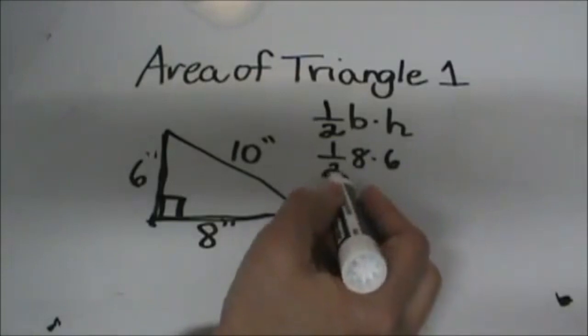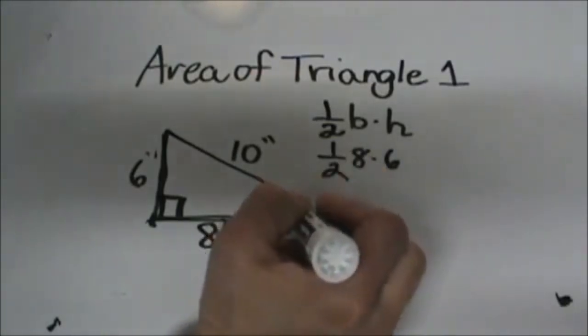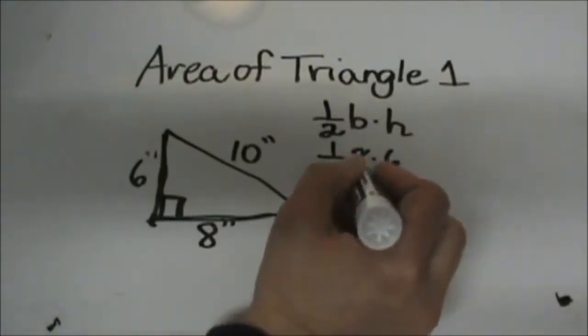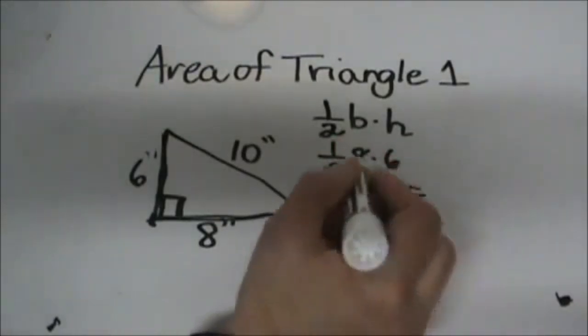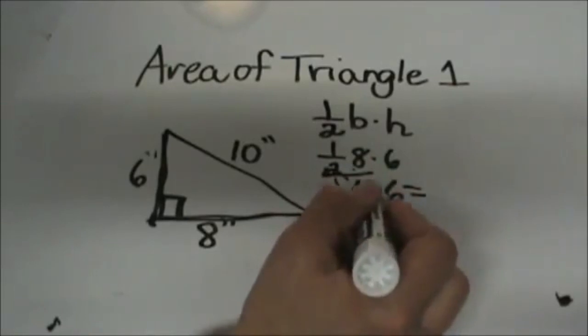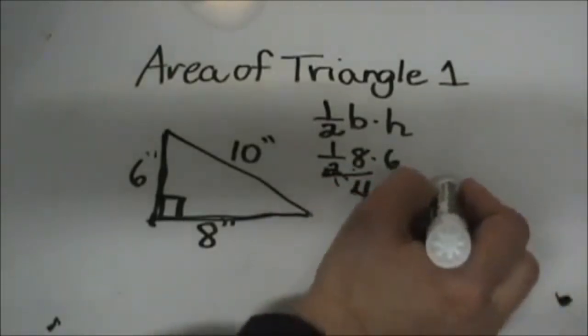Now you have a couple choices here. You can take half of 8 which seems to be the simplest. Half of 8 is 4 and then times 6, or you can multiply 8 times 6 and then divide it by 2. Either way I like to simplify first. So half of 8 is 4 and then 4 times 6 is 24.